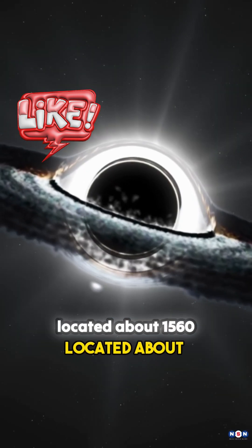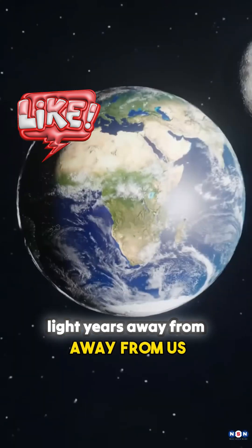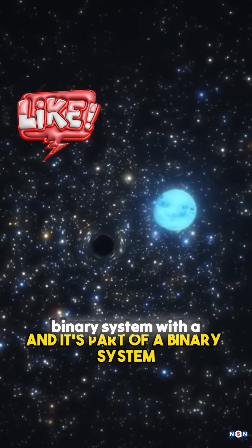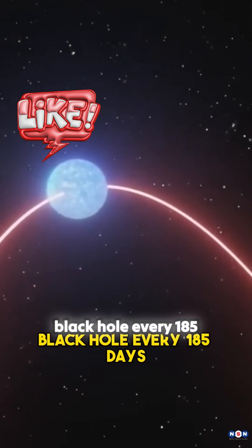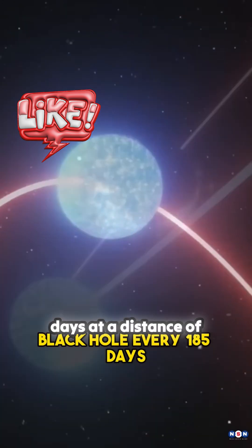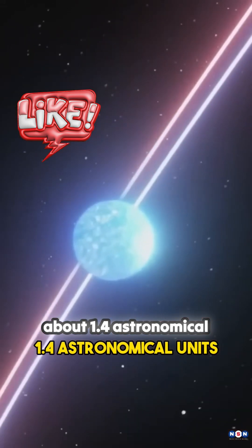Gaia BH1 is a black hole located about 1560 light-years away from us, and it's part of a binary system with a star that is very similar to our Sun. This star orbits the black hole every 185 days at a distance of about 1.4 astronomical units.